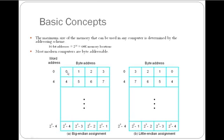How do we assign these addresses? If I am taking 16-bit addresses, 2^16 gives totally 64K memory locations, starting from 0 to 2^k minus 1, where k denotes 16. If it is 32-bit, then 2^32 minus 1. If it is 64-bit, 2^64 minus 1, and so on. To assign addresses for these bytes, we have two approaches: Big Endian and Little Endian.